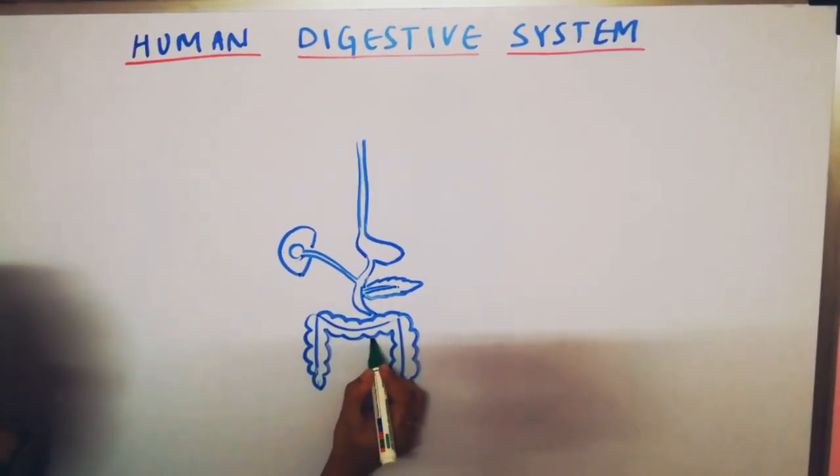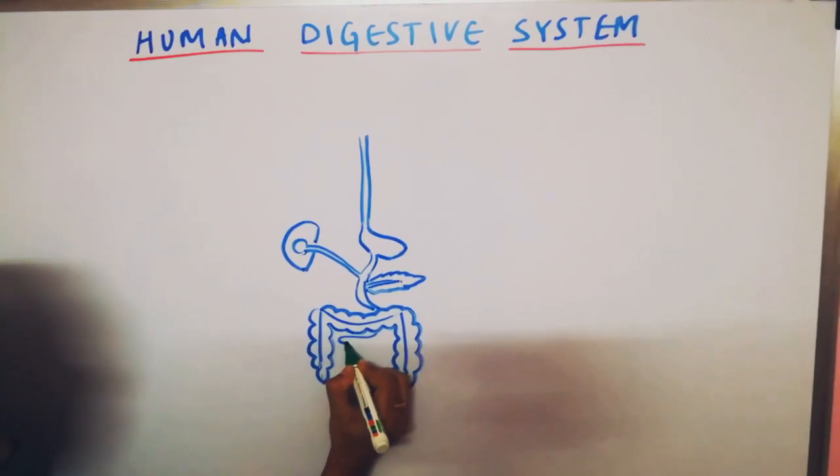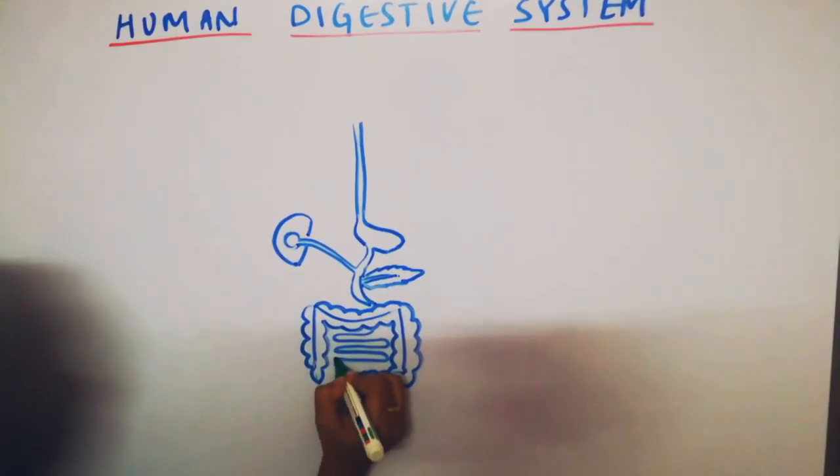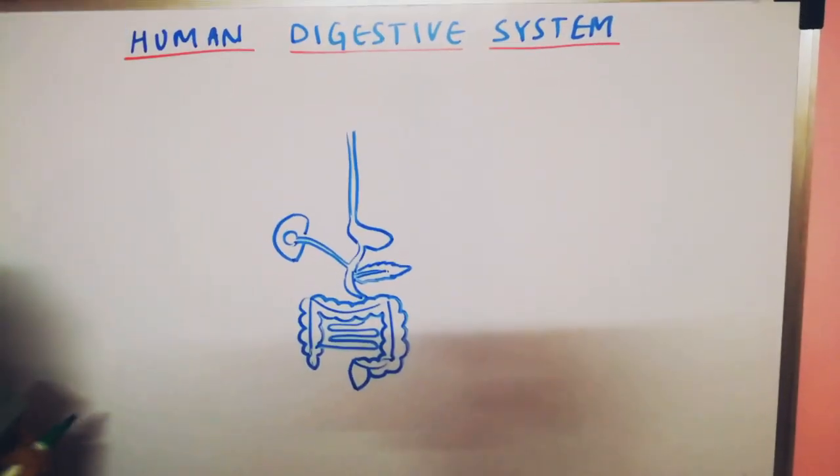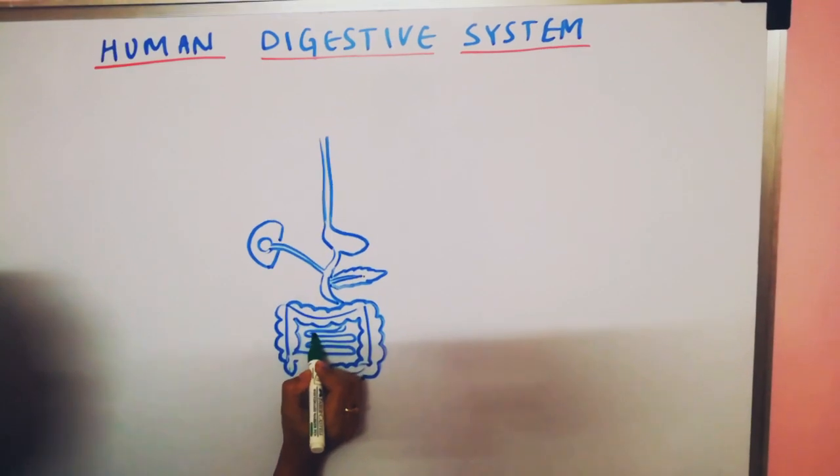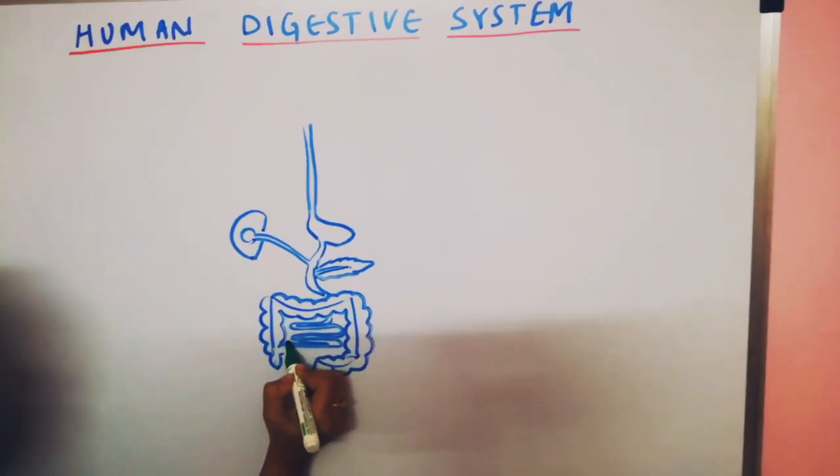Then what is left is our small intestine. So small intestine make curls like this, long, and join it to the large intestine. Make it double also if you want. Space is there. Make it double and join it here.